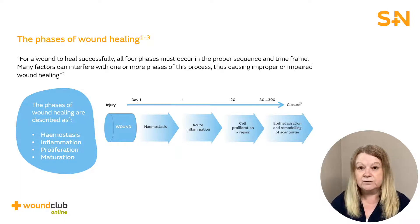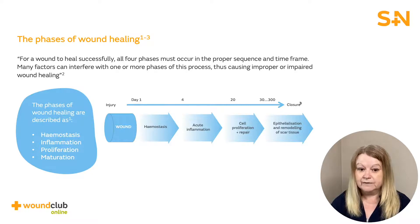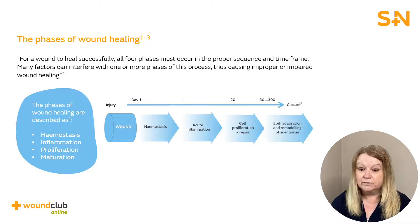The second phase of healing is acute inflammation, which aims to prevent further blood loss through vasoconstriction. It is also the body's natural response to injury by preventing infection. Once the bleeding has stopped, the blood vessels within the wound dilate, allowing fluid to carry the cells needed for the healing process into the wound.